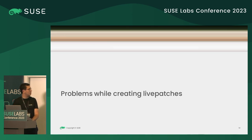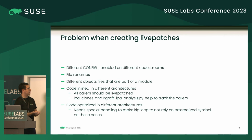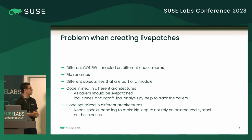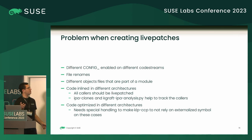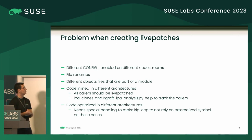Now I'll show some problems while creating livepatches. Code streams have different configs enabled or not, so we need to check which of them are affected and how — sometimes modules are built in, sometimes they are external modules, and this needs to be adjusted case by case. Files get renamed between code streams, so this also needs to be adjusted. Different object files can be parts of different modules: recently I found that an object file was part of one module on upstream, but in other code streams it was used by two different modules. It can change drastically between code streams.